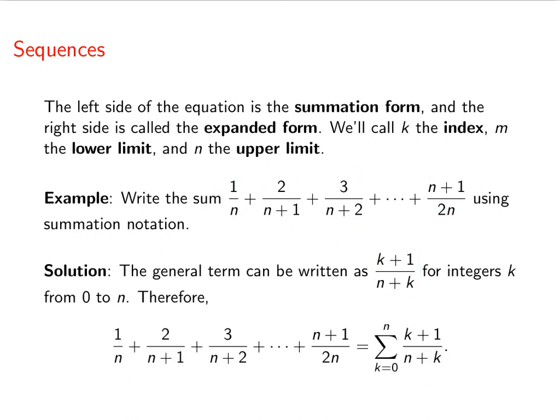That means we can write it more compactly. This expanded form of the sum can be written using the summation form. It'll look like this. Since we know what the general term looks like, that's what we're adding, and then the sigma tells us where to start and stop the k. That's all for now.